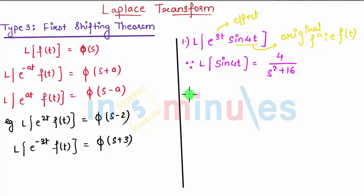Therefore the effect of e raised to 3t on function f of t will be, phi of s will be phi of s minus 3. I can say this is nothing but phi of s which is Laplace of f of t. Therefore phi of s minus 3.